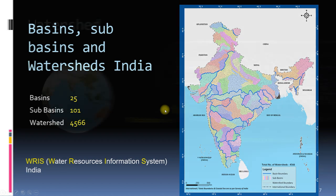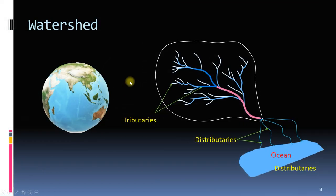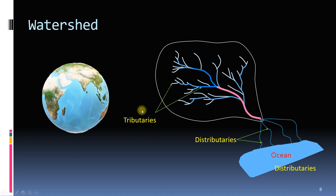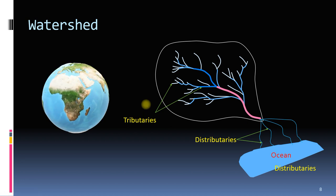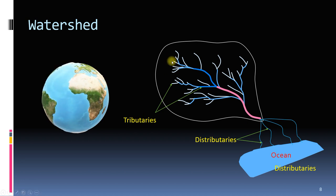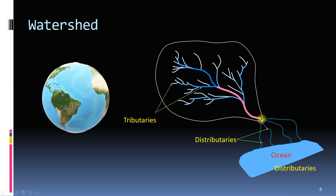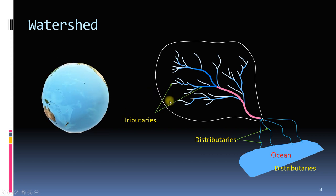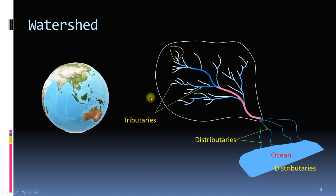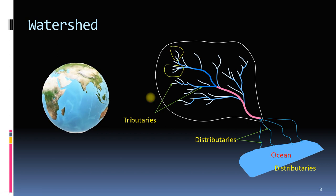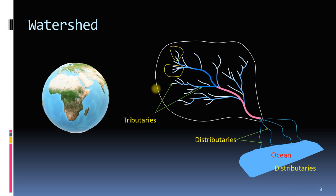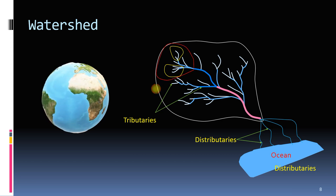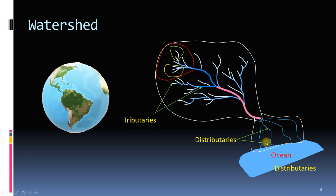How do we decide which area is a drainage basin, sub-basin, or watershed? A drainage basin is taken as the area contributing to a river from its source, that is the start, to its mouth, that is the end of the river. Sub-basin and watershed areas contributing to tributaries are selected from a management point of view. For example, in this diagram, we take the area covered by yellow lines as watersheds, red lines as sub-basins, and the whole diagram as the drainage basin.